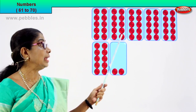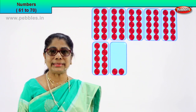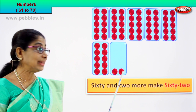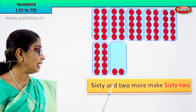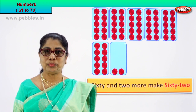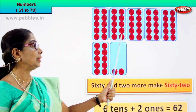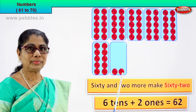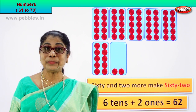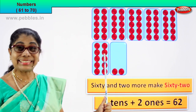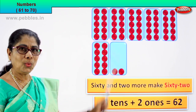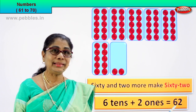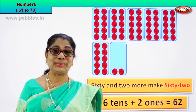So one ten, two tens, three tens, four tens, five tens, six tens. What is six tens? Sixty. Sixty and two more. Sixty and two more make sixty-two. That is six tens plus two ones equal to sixty-two. Six tens plus two ones. What is six tens? Sixty. What is two ones? Two more. What does this make? Sixty-two. You write the numeral sixty-two and its name sixty-two.